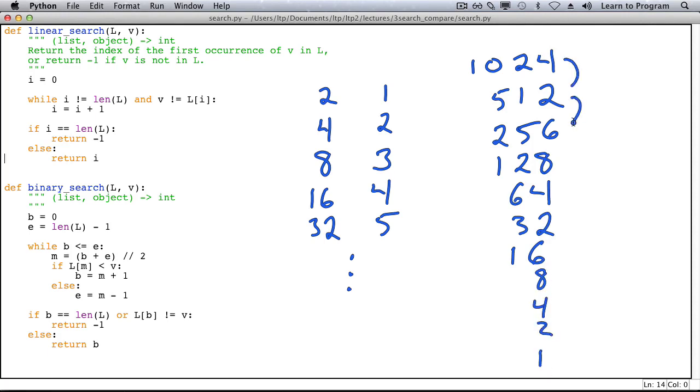So there's one division, two, three divisions, four divisions, five divisions, six divisions, seven divisions, eight divisions, nine divisions, ten divisions.